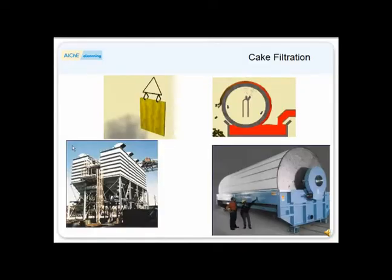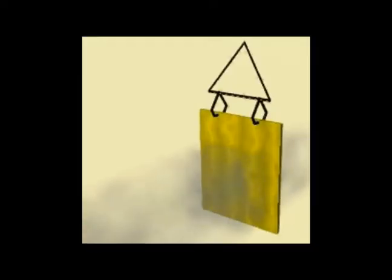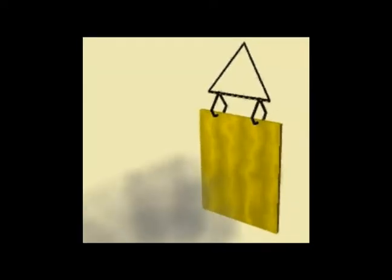Another example is the bag filter for removing dust from gas streams. In this case, the dust cake buildup is regularly removed by mechanical means, either by shaking the bag directly or creating a reverse pulse of gas which has the same effect.